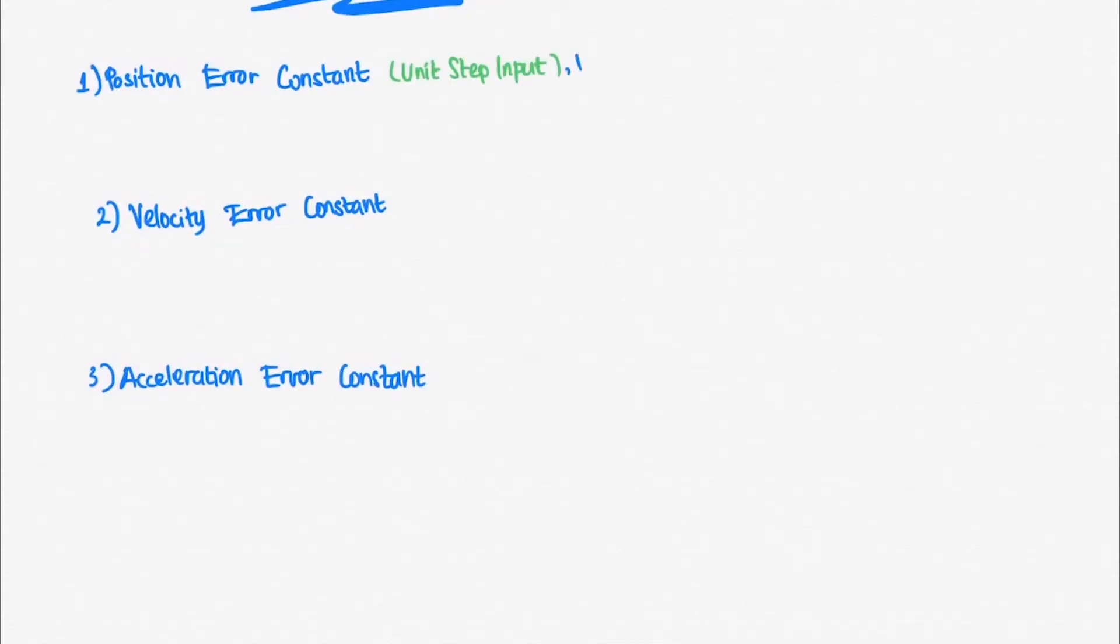There are derived from steady-state error formula of negative unity feedback system when it is being tested by unit step input, ramp input, and parabolic input, respectively.